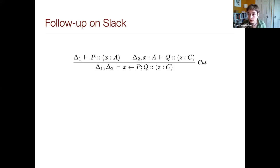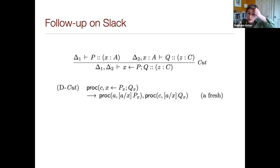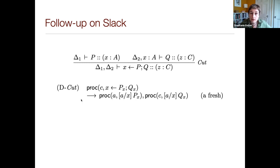The question was: the person went back through the slides and looked at the typing rule for cut and then also the dynamics for cut. Just to remind you, in the type rule, we have a process that is spawning process P and then continues as Q. In the continuation Q now has access — is connected by a channel — to this newly spawned process.